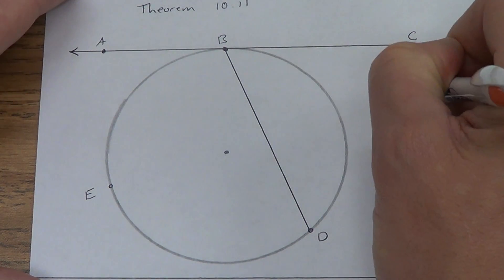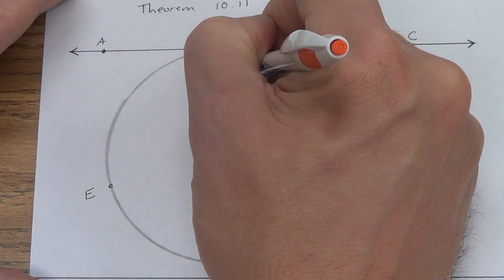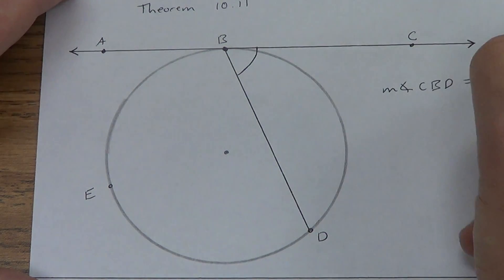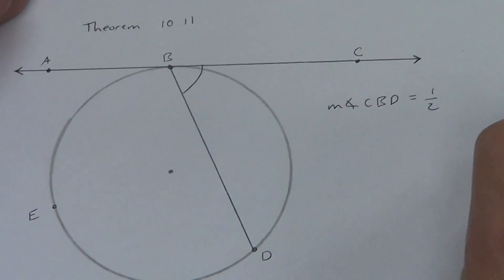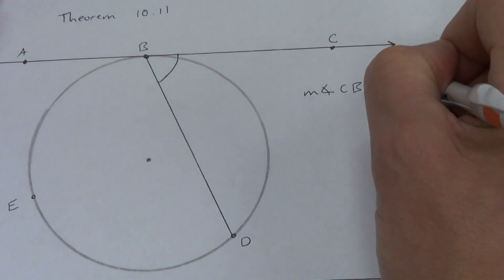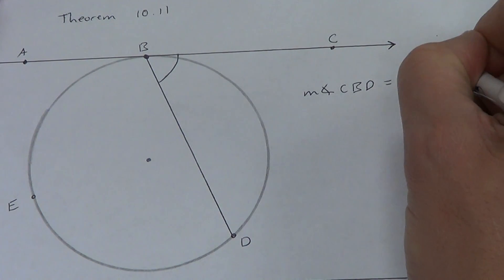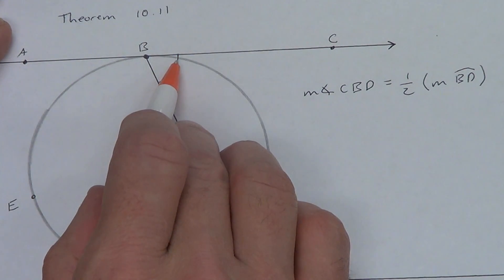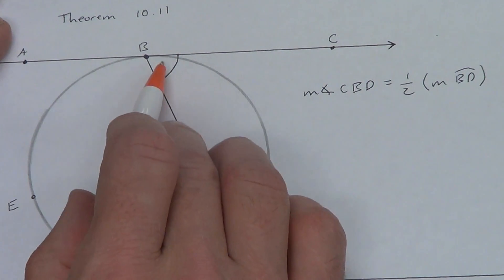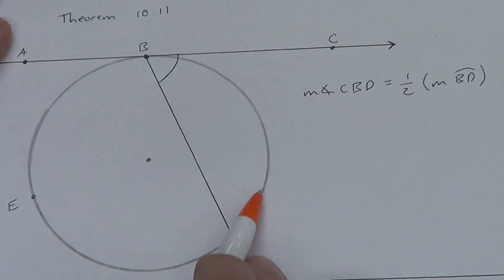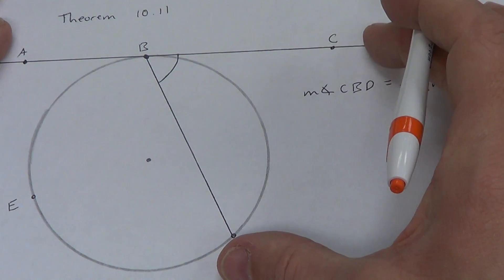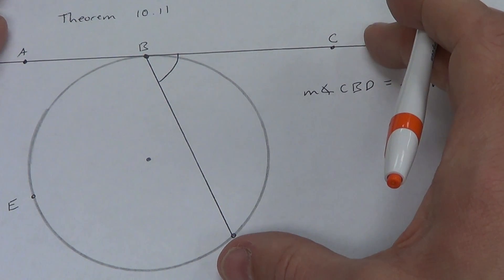So angle CBD — that's this one right here — the measure of angle CBD equals one-half the measure of arc BD. This angle extends all the way out to the tangent line and is half of its intercepted arc. If I extended this chord out so it became more like a ray, this arc is inside of this angle. That's what an intercepted arc is — we talked about that back in lesson five.